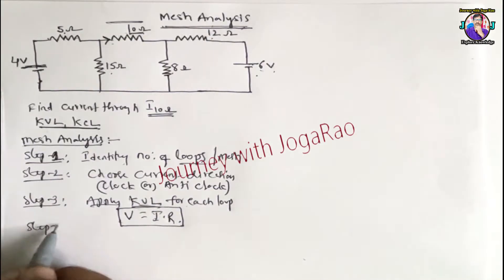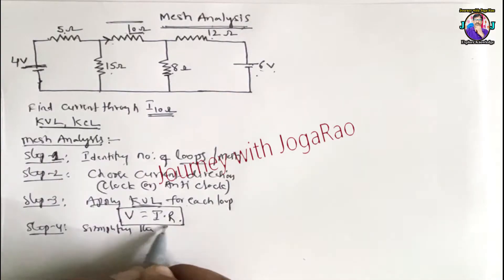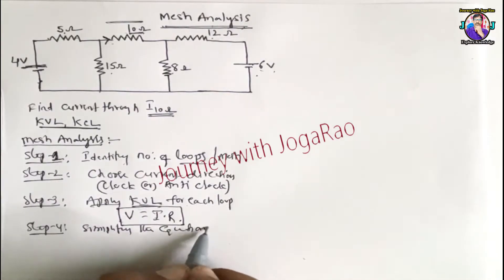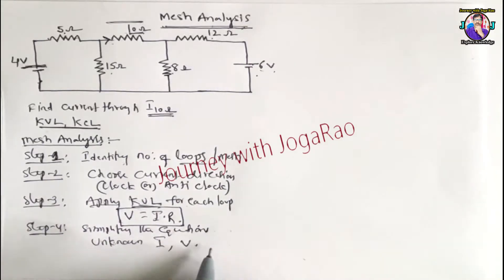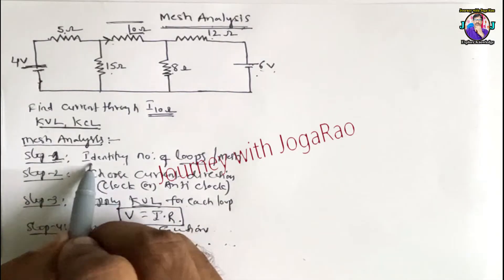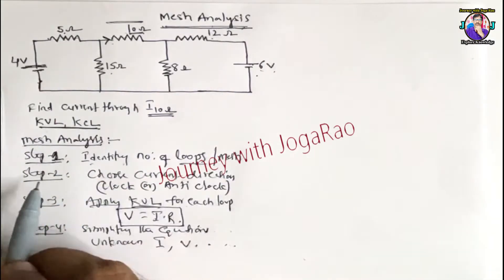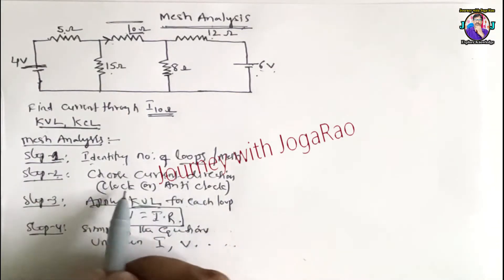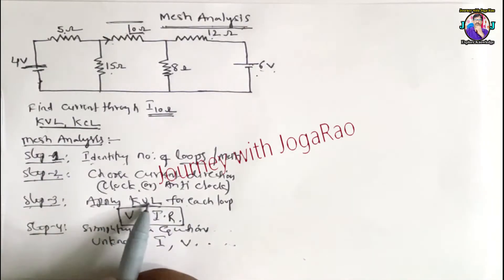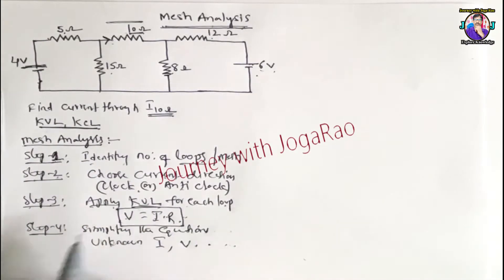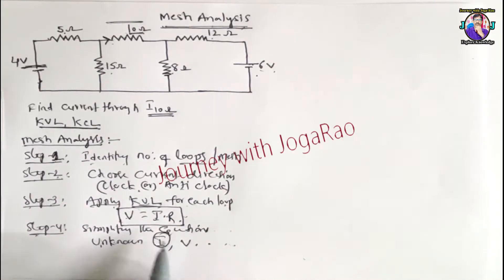Step 4: Simplify the equations and solve for the unknown current or voltage. So here are the basic steps: Step 1 — identify number of loops or mesh; Step 2 — choose current direction (clockwise or anti-clockwise); Step 3 — apply KVL for each loop in V = IR form; Step 4 — simplify equations and calculate unknown current and voltage.